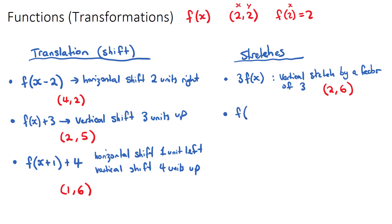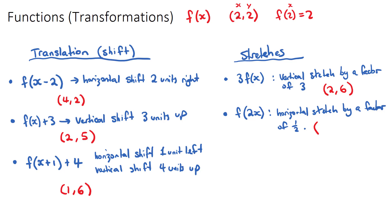The horizontal stretch is the tricky one. If we have f(2x), the change is inside the bracket where the x is. This is a horizontal stretch by a factor of 1 over that number — so it's a horizontal stretch by a factor of one half. What that means for our coordinate is that the x value is multiplied by one half, so 2 becomes 1, and the y value doesn't change. Our new point is (1, 2).